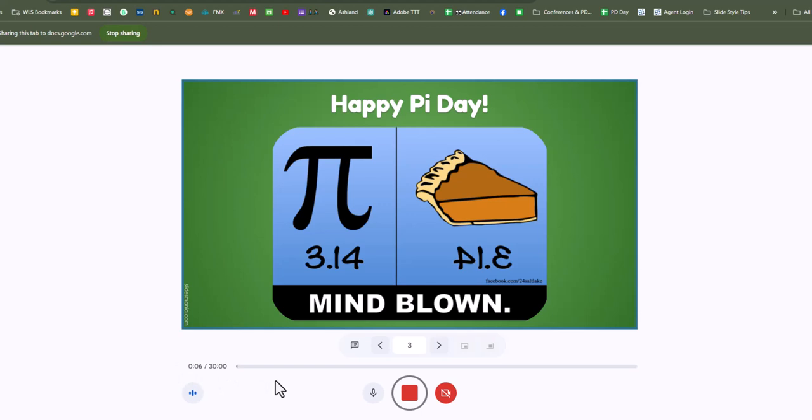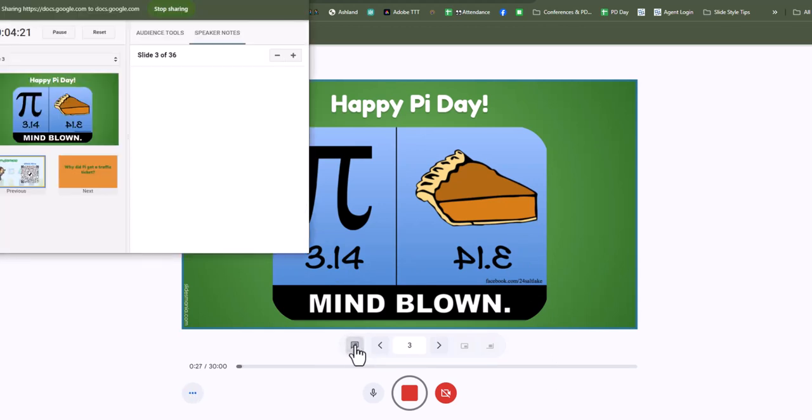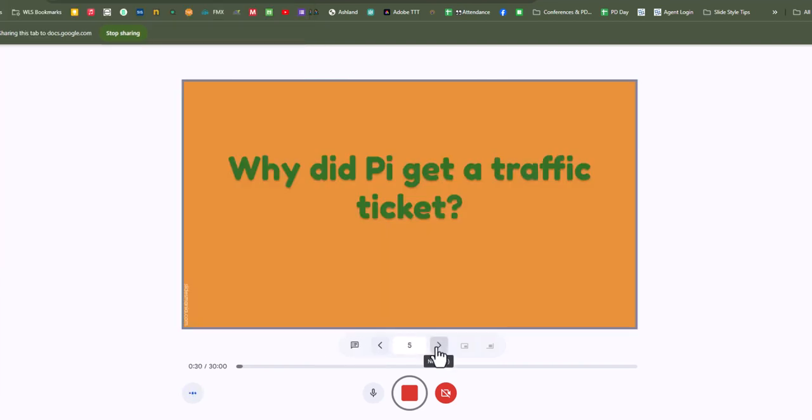So did you know that the reflection or mirror image of the beginning of pi spells P-I-E? Mind-blowing right there, mirror image pi. So as I'm recording if I want to get into my speaker notes I could click and this won't show up in the recording, but it just helps me as I'm going through. So like for this next one, why did pi get a traffic ticket?